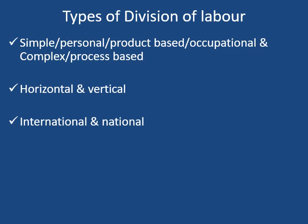Next is national division of labor. In India, for example, several jute mills are concentrated in the eastern part of the country, while cotton mills are located in the western and southern parts. This is region-wise division — not country-wise, but regions within one country. So the southern and western parts of India are into cotton mills while the eastern part is into jute mills. This region-wise distribution of work within a country is called national division of labor.